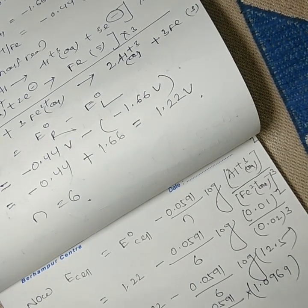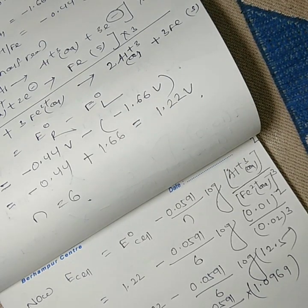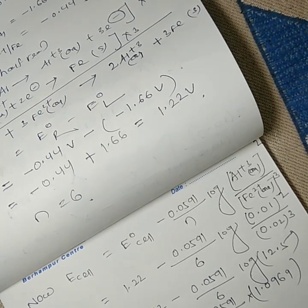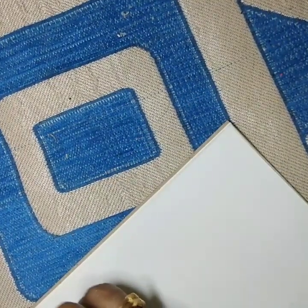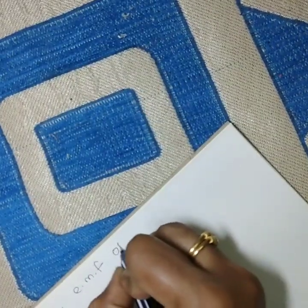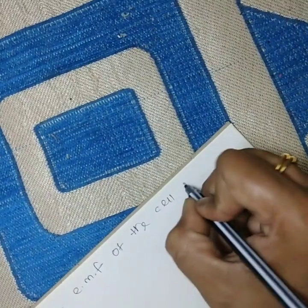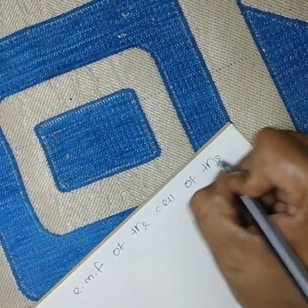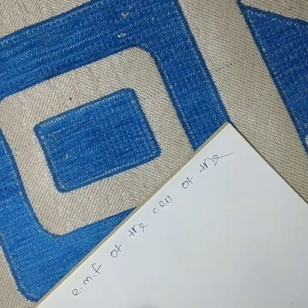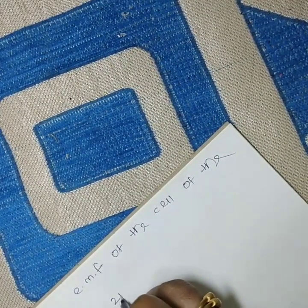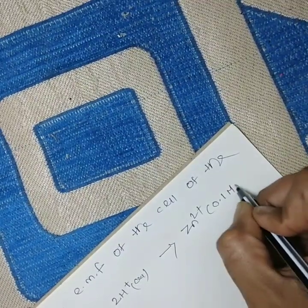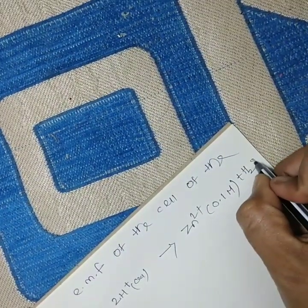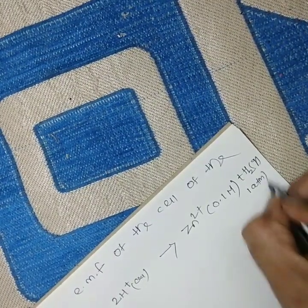Next we look at another type of problem using the Nernst equation. Second question: the reaction given is Zn(s) + 2H⁺(aq) → Zn²⁺ (0.1 M) + H₂(g) at 1 atm pressure.